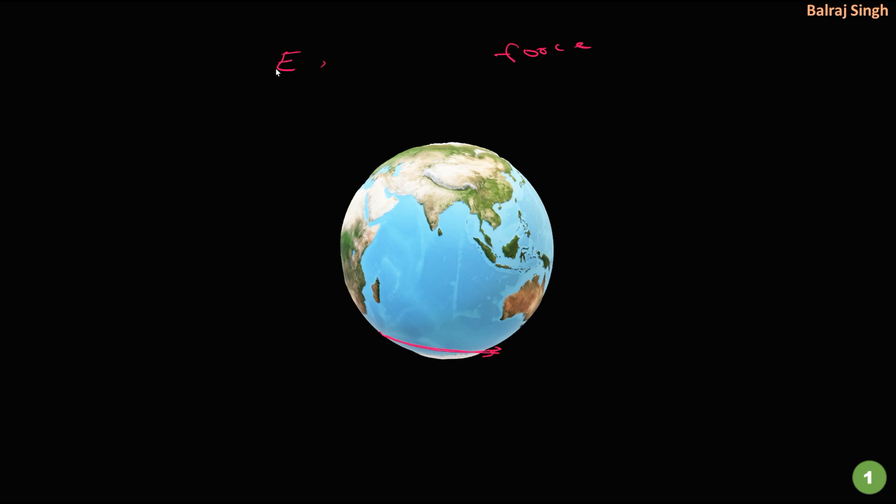What happens in Coriolis is that any body moving in the northern hemisphere is deflected towards its right, and any body moving in the southern hemisphere is deflected towards its left.